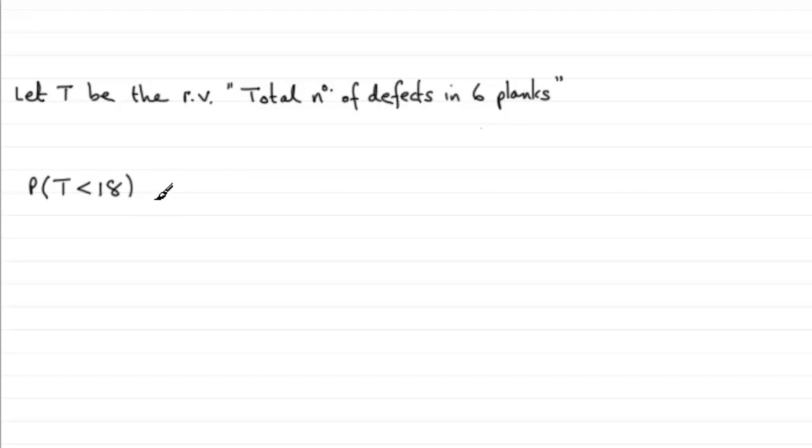First of all, let's set up what distribution this is. It's got to be a Poisson distribution. If we go back to earlier, we defined X as the random variable number of defects in a 100 cm plank, where X was a Poisson distribution with mean of 5.